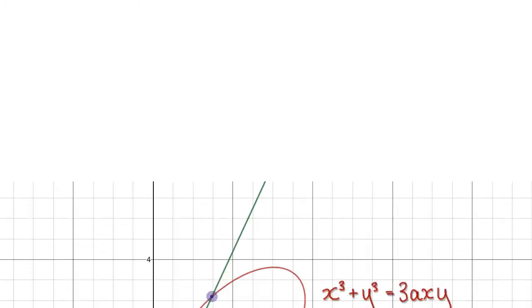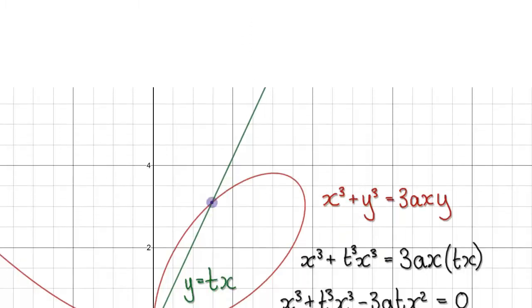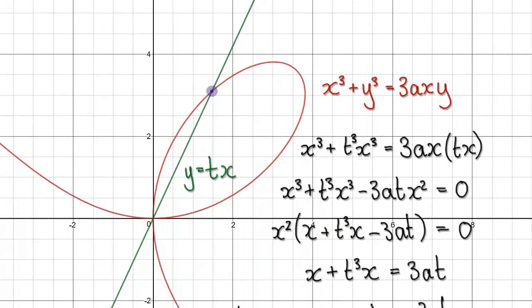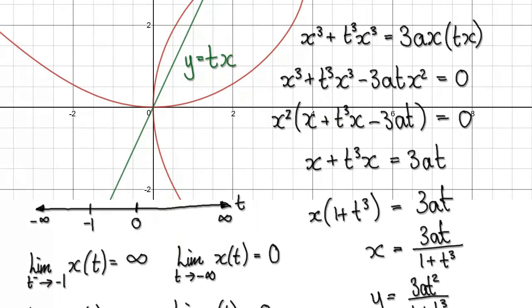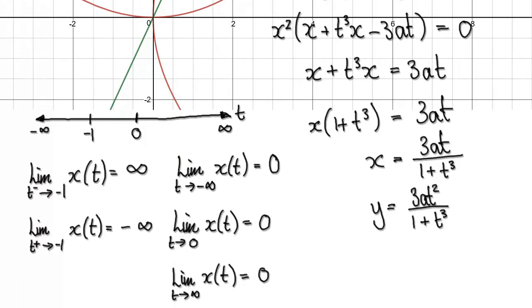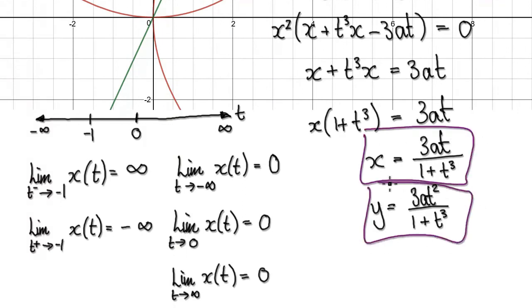Following on from the previous video, we got to this stage where we've got our parametric equations. In this video, we're going to look at the movement of the particle as t varies from negative infinity to positive infinity.